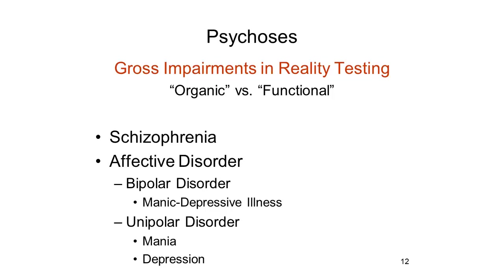Perhaps the most well-known of the psychotic disorders is schizophrenia, which is characterized by disordered language and thought processes. There's also a variety of affective disorders, which primarily affect emotional functioning—affect as opposed to cognition, as the name implies. This includes bipolar disorder, also known as manic depressive illness, and varieties of unipolar affective disorder, including pure mania, which is relatively rare, and unipolar depression, which is more common.